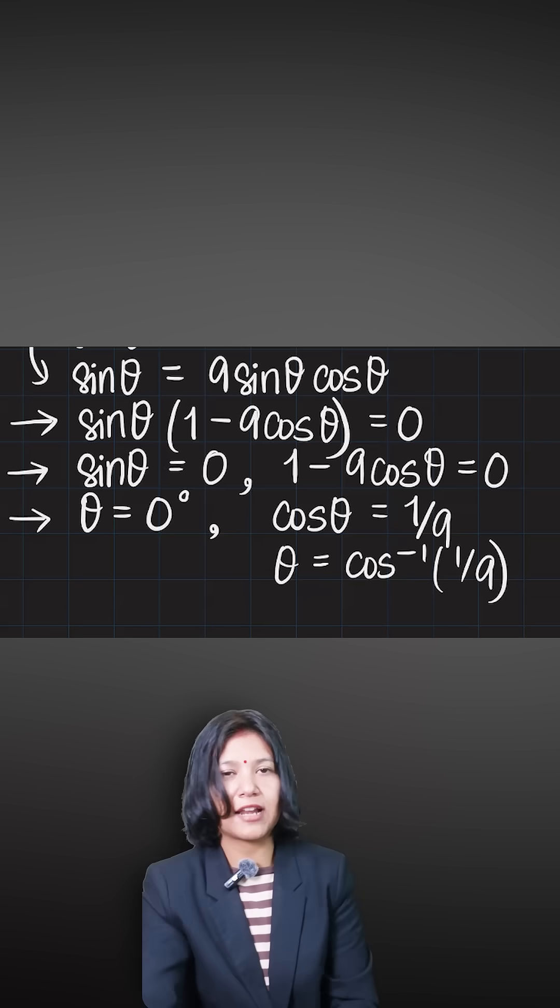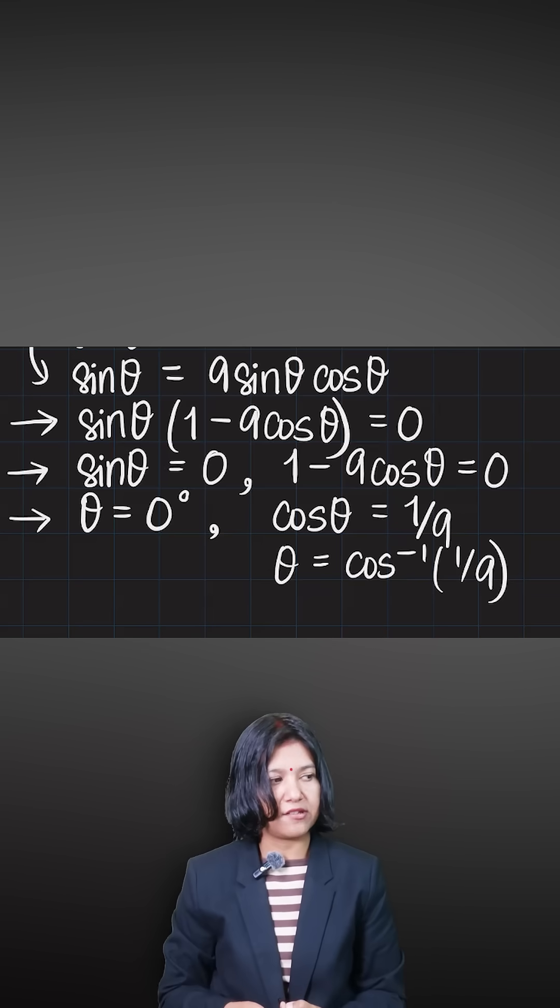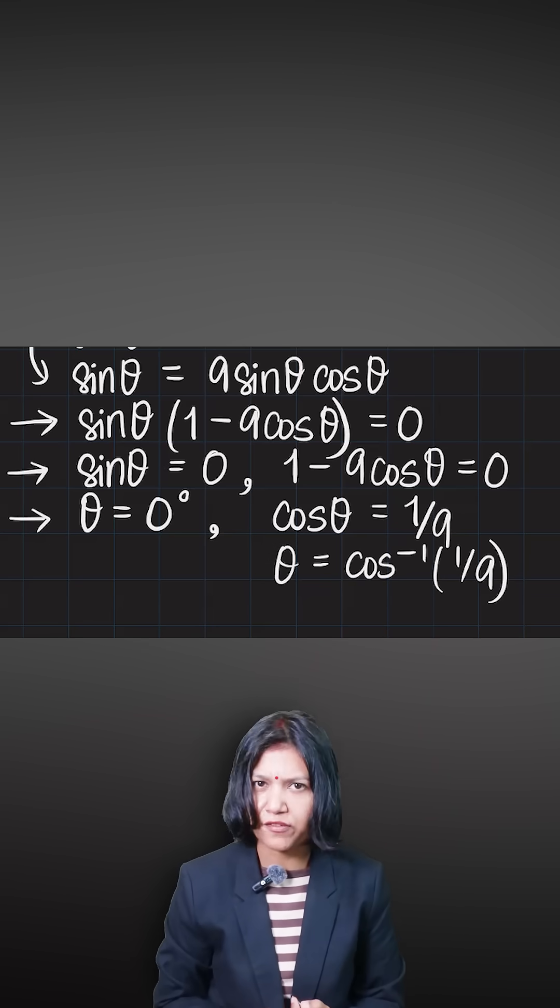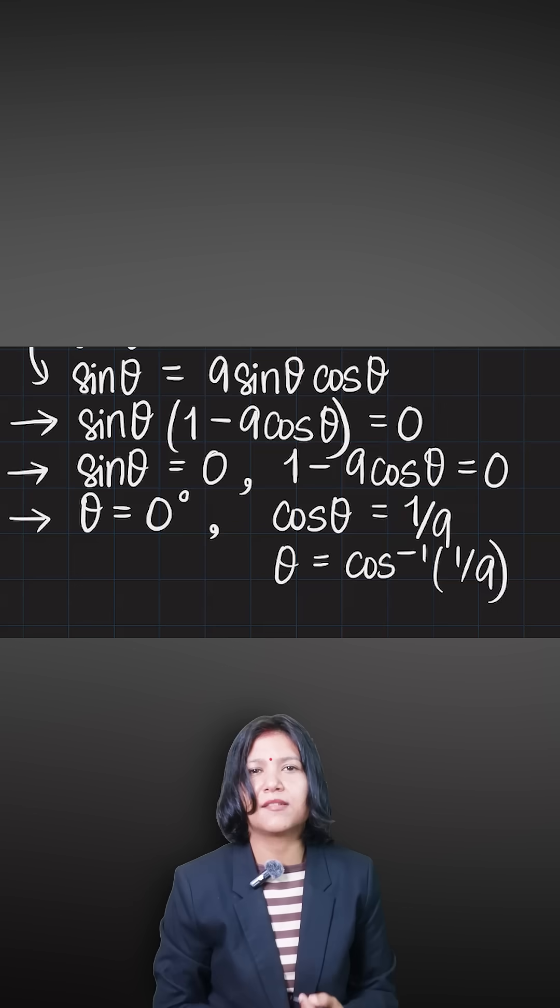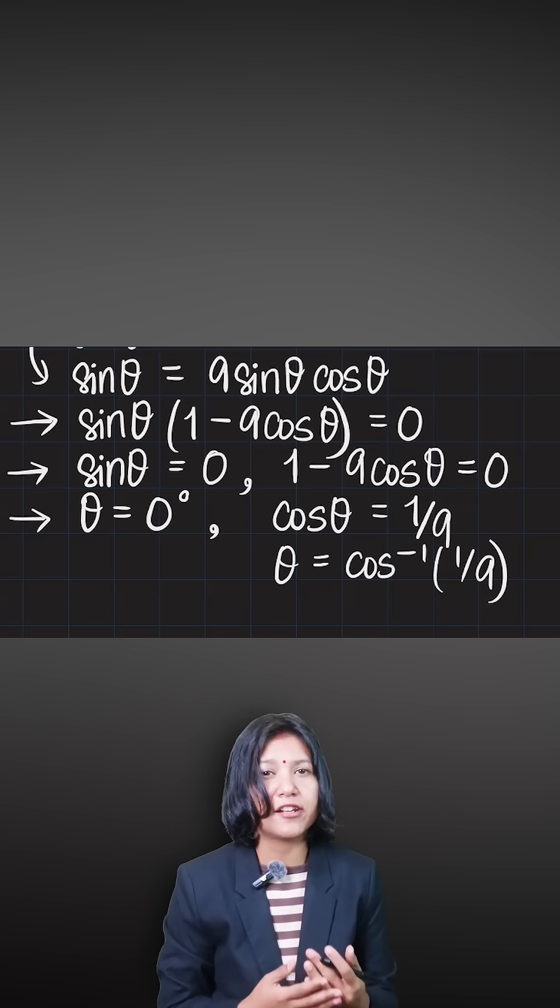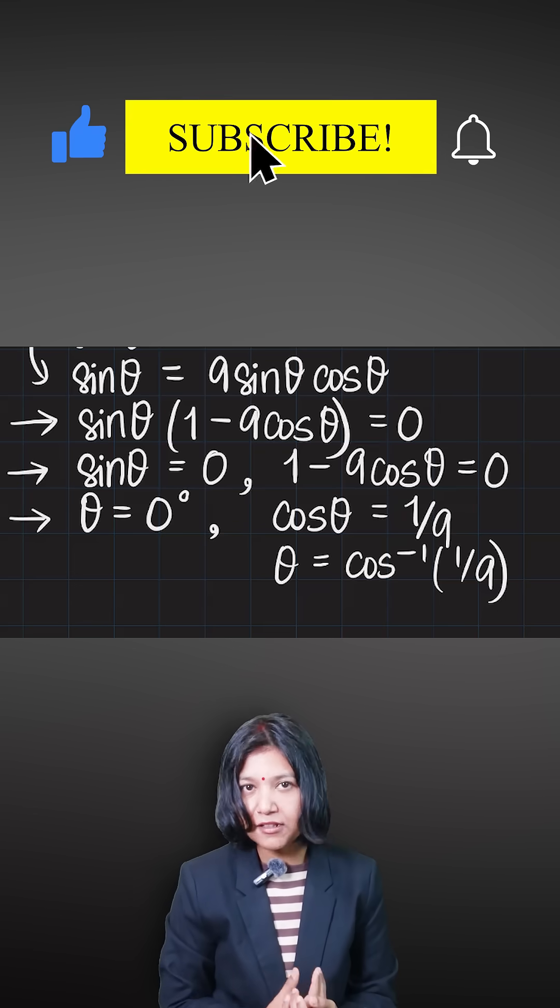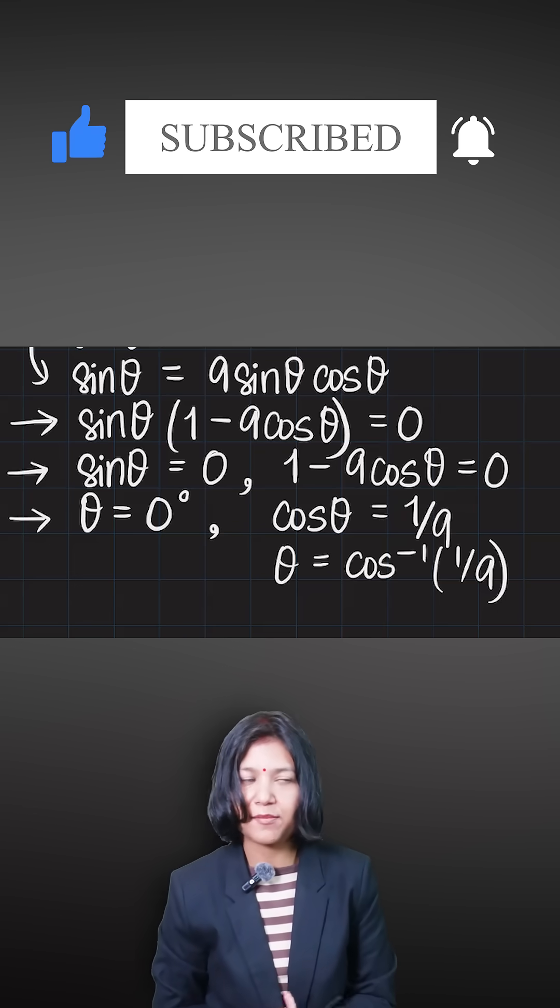If you're doing this without a calculator, you'll have to leave the answer here. You got two values of theta. This is how you get the maximum number of values, provided you don't cancel out any variable from both sides.